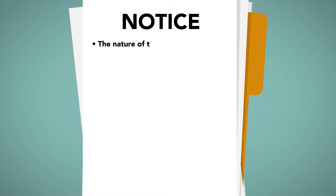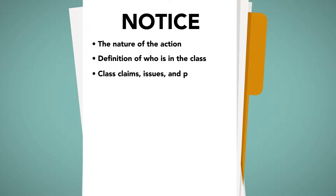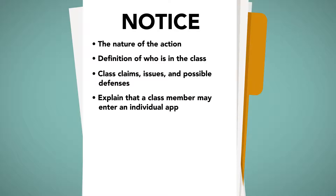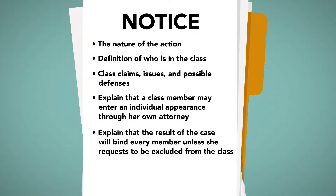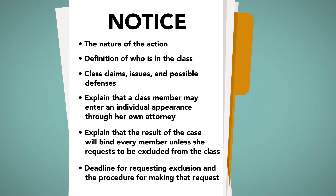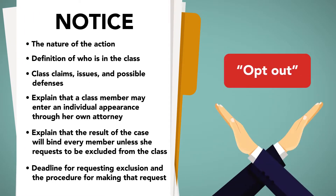The notice must explain the nature of the action and the definition of who is in the class. It must also include the class claims, issues, and possible defenses, and must explain that a class member may enter an individual appearance through her own attorney if the member so desires. Finally, the notice must explain that the result of the case will bind every member unless she requests to be excluded from the class. The notice should further explain the deadline for requesting exclusion and the procedure for making that request, usually called the opt-out.